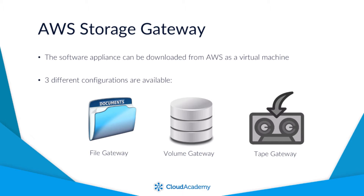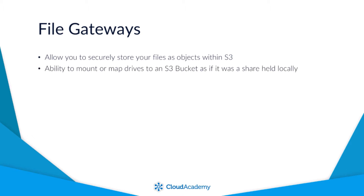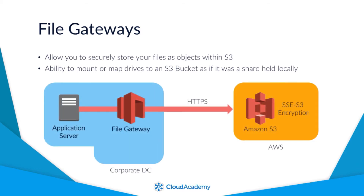Starting with file gateways: file gateways allow you to securely store your files as objects within S3, using it as a type of file share which allows you to mount or map drives to an S3 bucket as if the share was held locally on your own corporate network. When storing files using the file gateway, they are sent to S3 over HTTPS and are also encrypted with S3's own server-side encryption, SSE-S3.